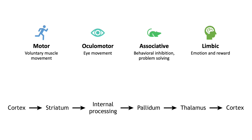It is important to recognize that the basal ganglia plays an important role in a number of functions. For example, medications that are used to treat Parkinson's can sometimes lead to the presentation of impulse control disorders, a result of dopaminergic changes in the limbic loop through the basal ganglia.